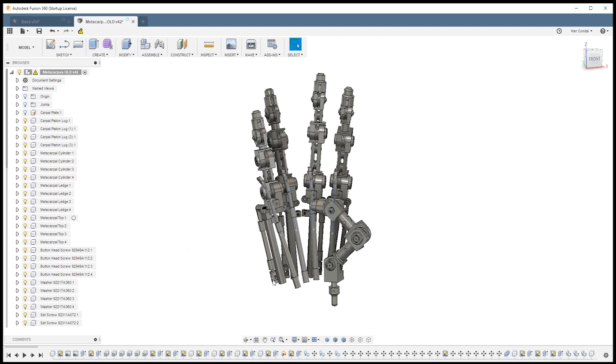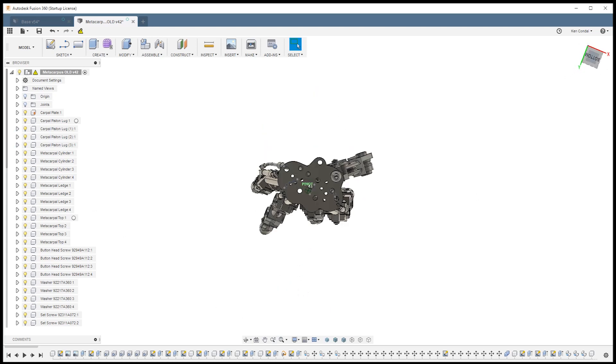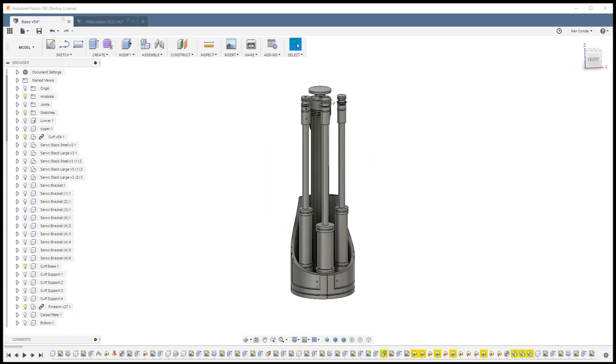At the base of the fingers is a part called the carpal plate, which is essentially the wrist. It looks something like this, and that actually sits on top of the forearm parts like this. And these pistons will allow the wrist to pivot in various directions.